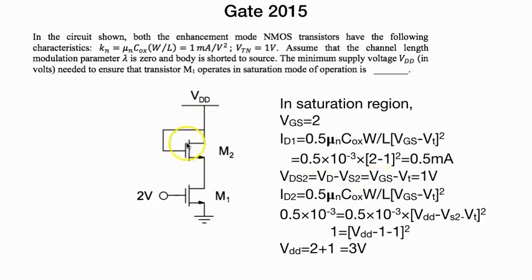As in saturation, similarly we have considered in this 2. So 2 minus 1 is 1. I think it should be VDS1 over here. This will give you VDS1, and VDS1 is equal to VGS minus VT.